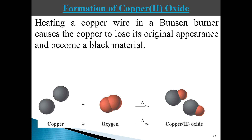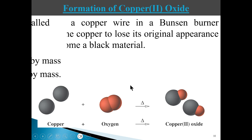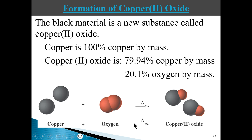You're forming a new substance completely different from the copper and oxygen that reacted — it has different properties. This is an example of a chemical change because the composition is changing. The original copper is 100% copper by mass, but copper-2-oxide is made up of 79.4% copper by mass and 20.1% oxygen by mass.